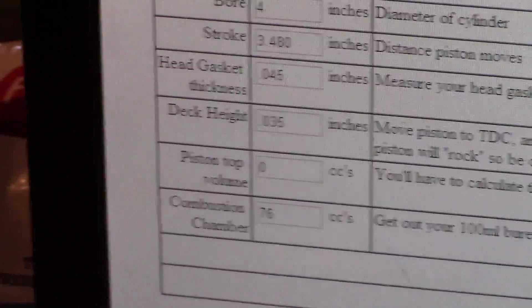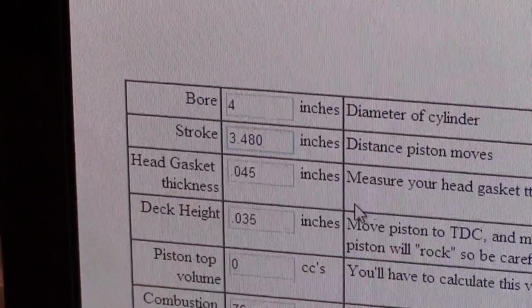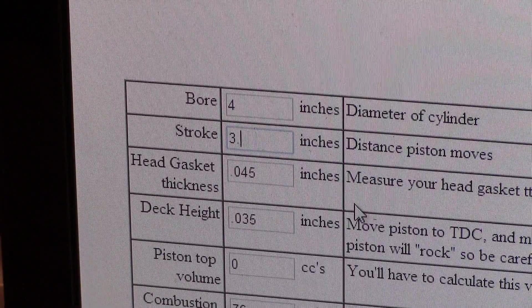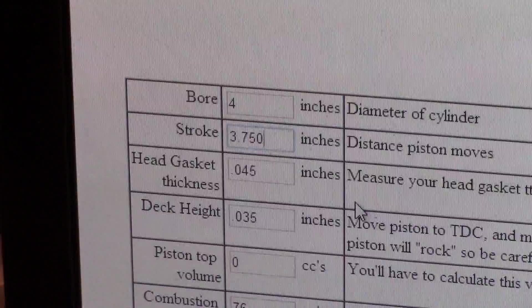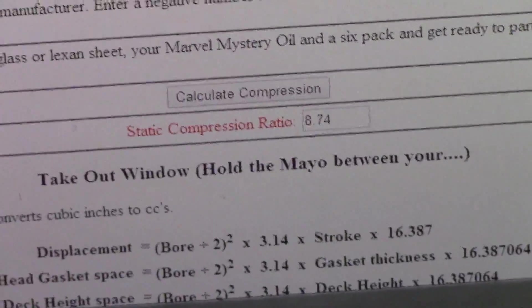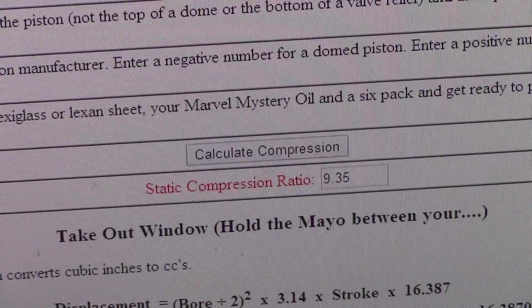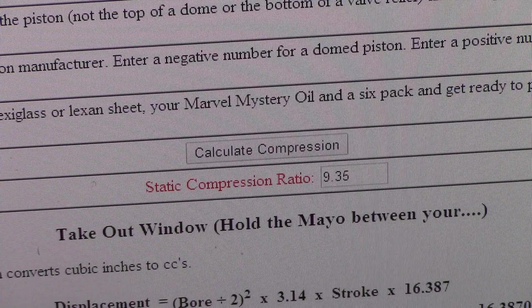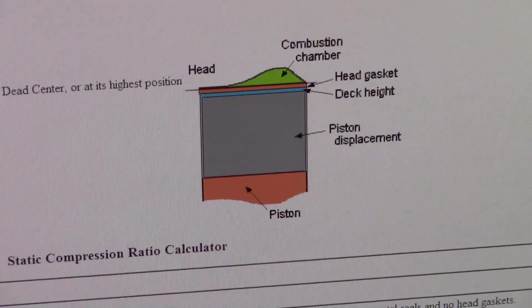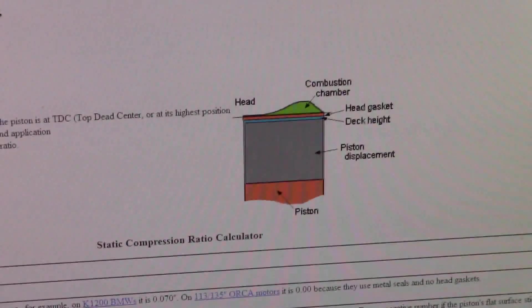Now on the stroker engine, we go back to the stroke and change it to our stroker crank — 3.750 inches. We don't change anything else; we just update the stroke from 3.480 to 3.750. Hit calculate and you can see what it does to the compression ratio. If all things are equal and you put a stroker crank in, it raises the compression ratio because it makes that larger volume bigger. The website also has a good explanation of piston dome volume, volume above the piston, head gasket thickness, deck clearance, and all of that. So that's compression ratio in a nutshell.